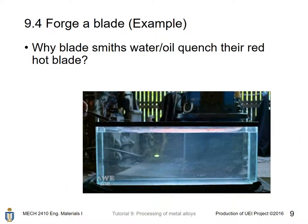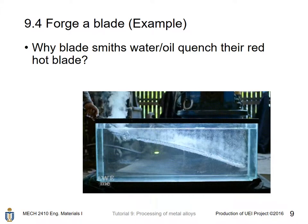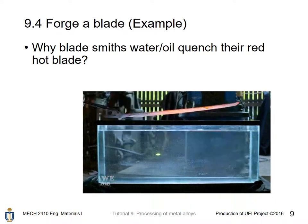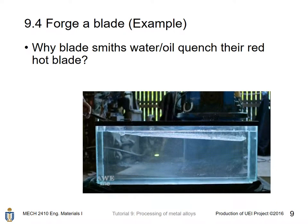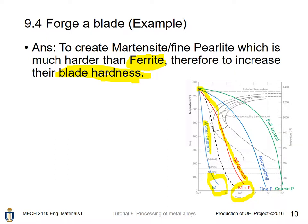Here is an example about the forging of a blade. Why do bladesmiths water or oil quench their red-hot blades? The answer is related to phase transformation and the quenching process. The blade is made of steel, and they want to produce martensite and fine pearlite, which are much harder than ferrite, to increase blade hardness.